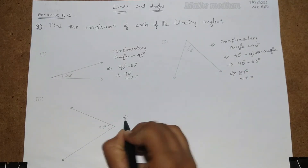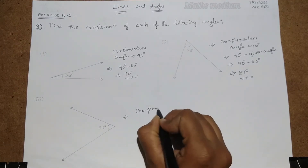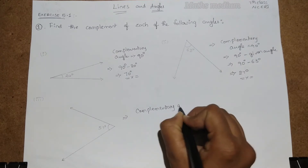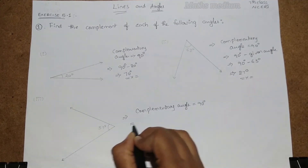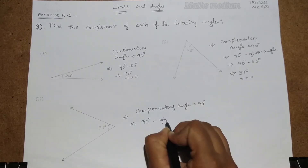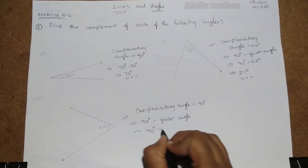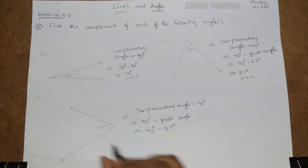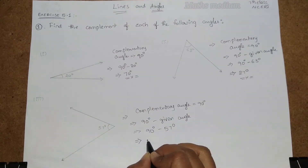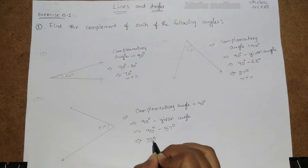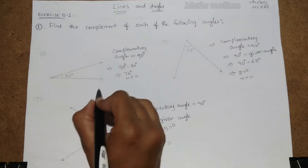Next, similarly for this one — we know that the complementary angle is equal to 90 degrees. So, 90 degrees minus 57 degrees, which is the given angle, gives us 33 degrees. So 33 degrees and 57 degrees are complementary to each other.